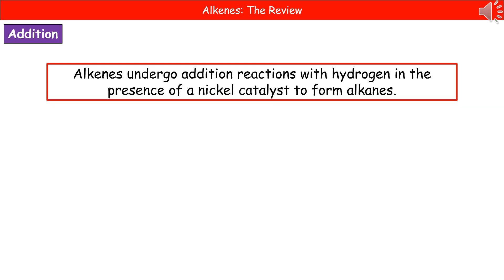Another way we can use addition reactions with alkenes is to actually form alkanes. If we take our alkene and add hydrogen in the presence of a nickel catalyst, that hydrogen will join to the alkene to form an alkane.